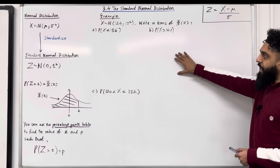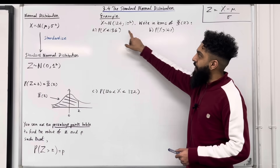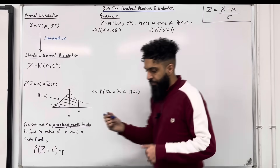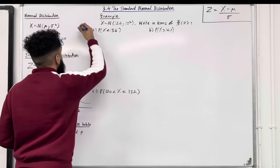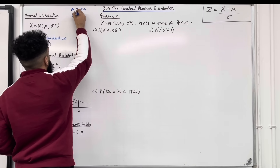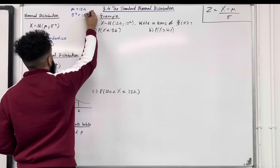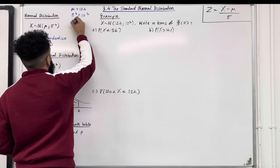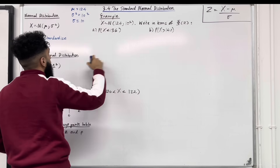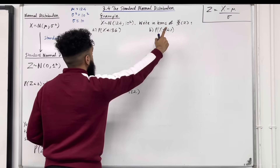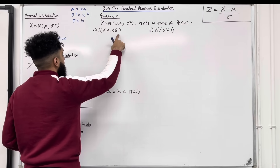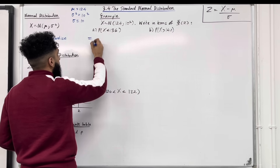Here is my example. X takes on a normal distribution with mean 124 and variance 10 squared. So we know that the mean mu is equal to 124, the variance sigma squared is equal to 10 squared, and hence the standard deviation sigma is the square root of 10 squared, which is 10. Write in terms of phi of Z: part A, probability X is less than 136. I need to standardize.